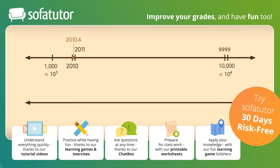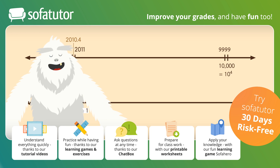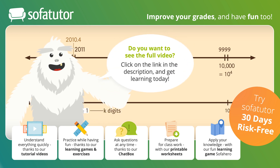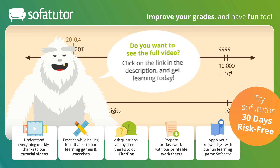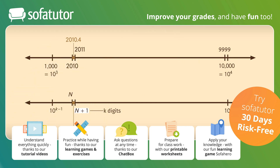In general, for any number m, we can find an integer n below it and an integer n plus 1 above it. If n plus 1 has k digits, 10 to the k will be the nearest power of 10 bigger than m, and 10 to the k minus 1 will be the nearest power of 10 smaller than m.